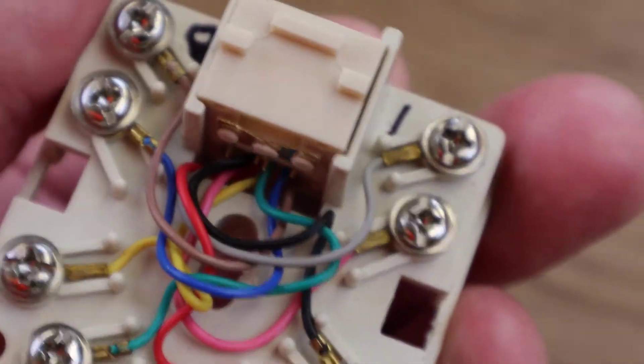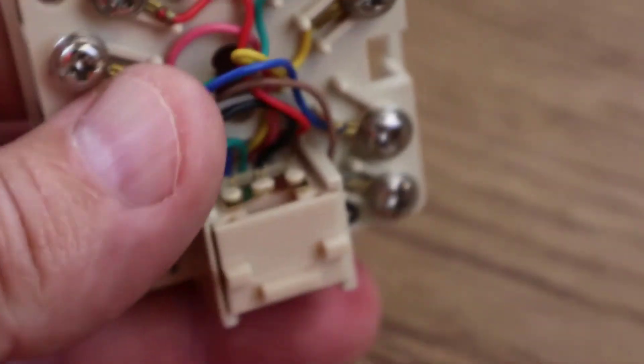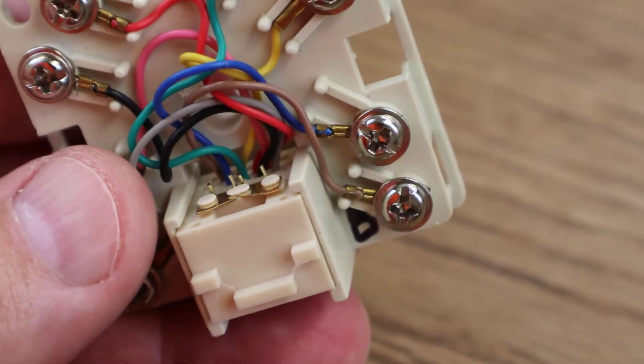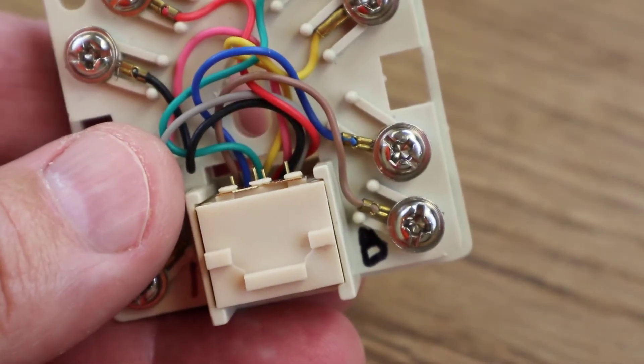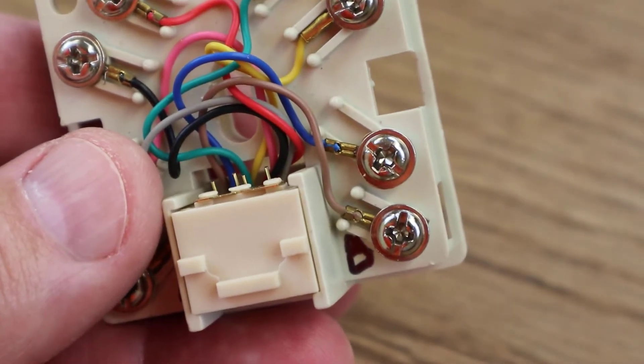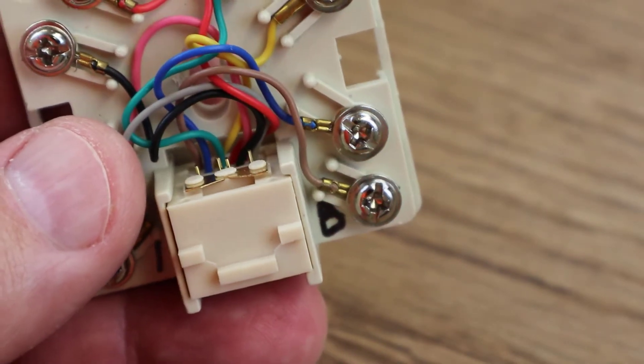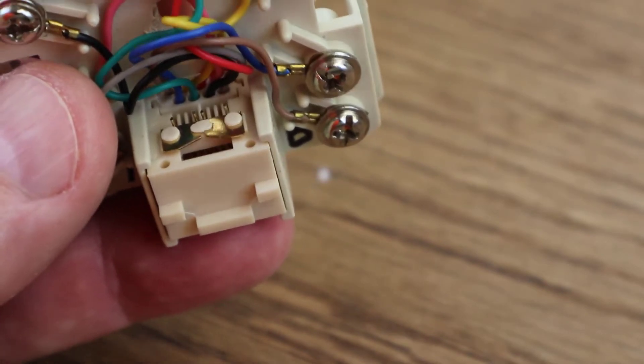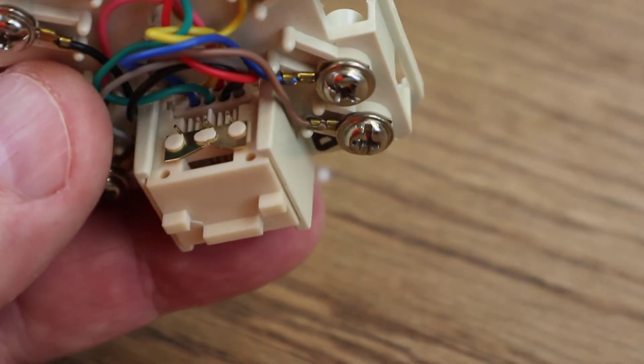And there you can see how pin one is actually in contact with pin four and how pin eight is actually in contact with pin five right there. It shows you. There it is right there. Those pins are making contact with those two shorting bars right there.